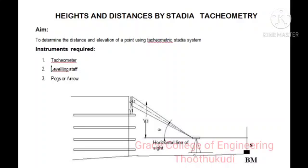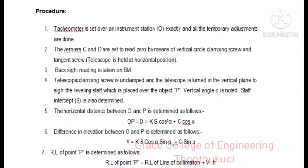The procedure to be followed: The tachymeter is set over an instrument station and all temporary adjustments are done. The vertical circle's vernier C and D are set to read zero by means of clamping screw and tangent screw.